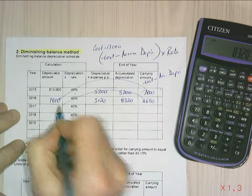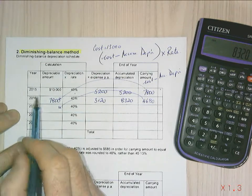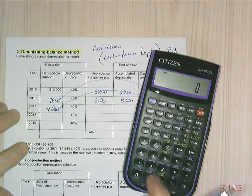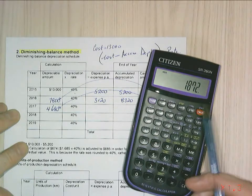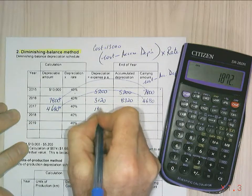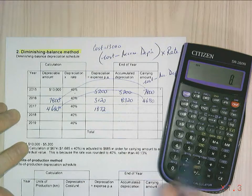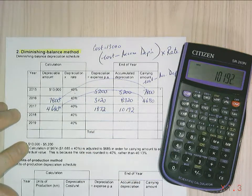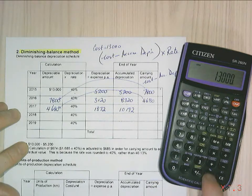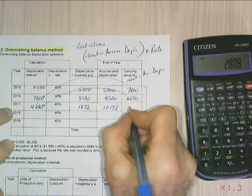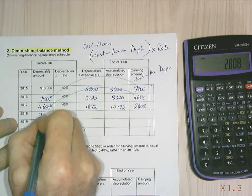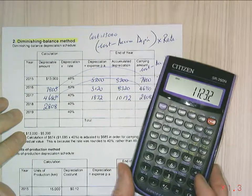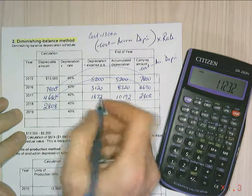And once again, that carrying amount becomes my depreciable amount the next period. So I've got $4,680 by my 40%, that equals $1,872. If I add that to my $8,320, I get $10,192. And if I take that away from $13,000, that equals $2,808. And that becomes my amount I'm depreciating next period. So my $2,808 times my 40%, gives me $1,123.